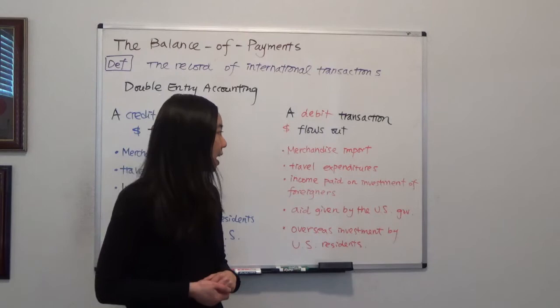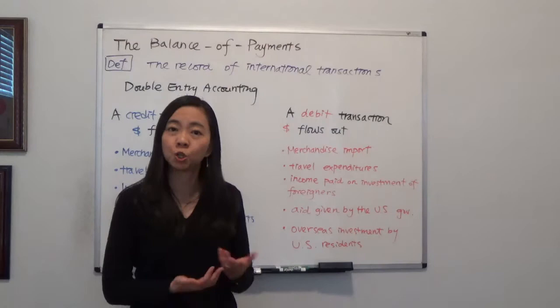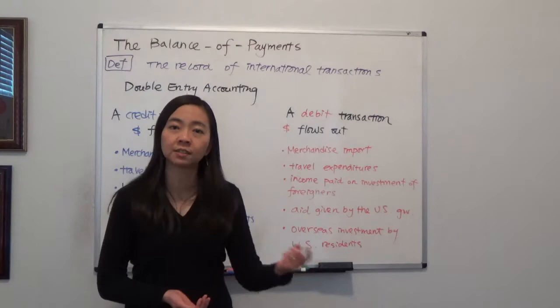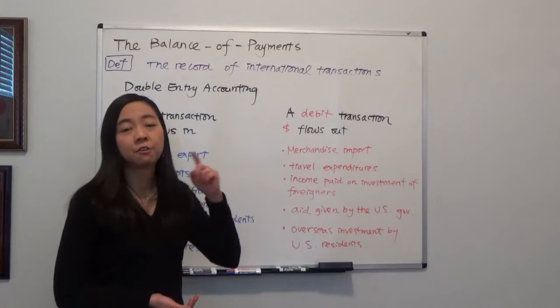The second debit example is travel expenditures. Suppose we have a US business person traveling via Lufthansa — a German airline. This US business person will have to pay for the travel service, so money flows out from the US to Europe.